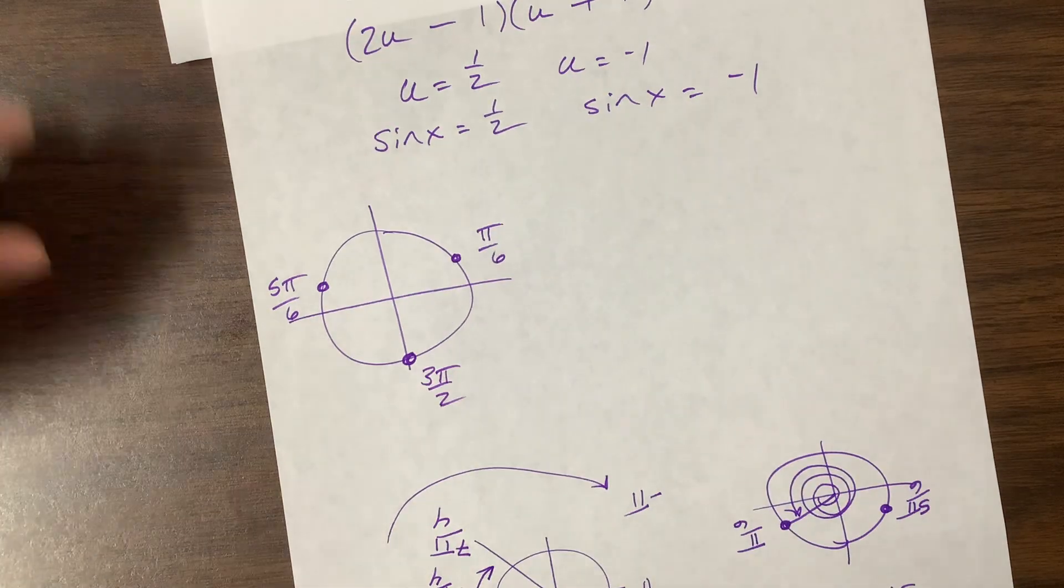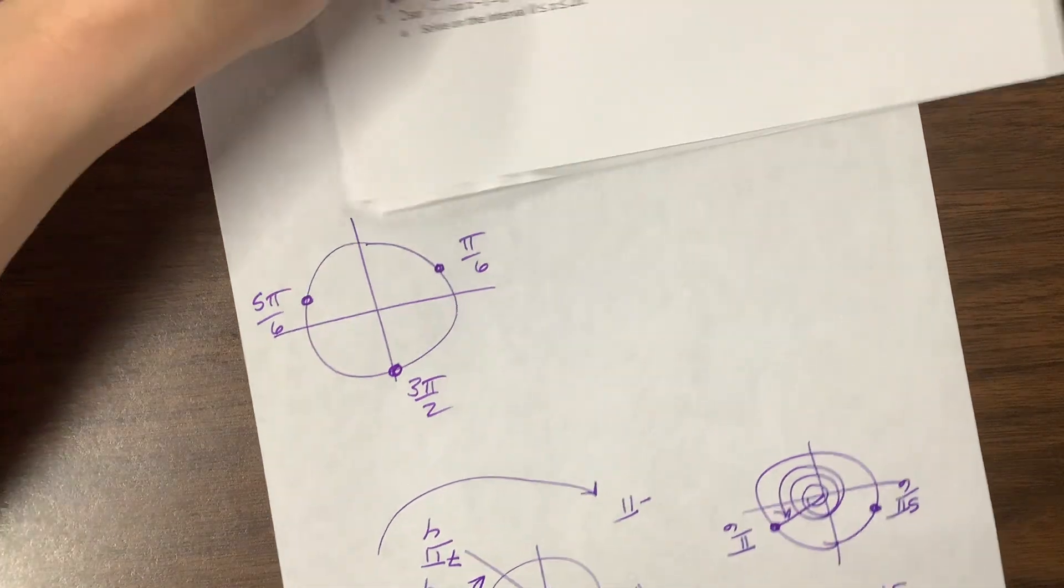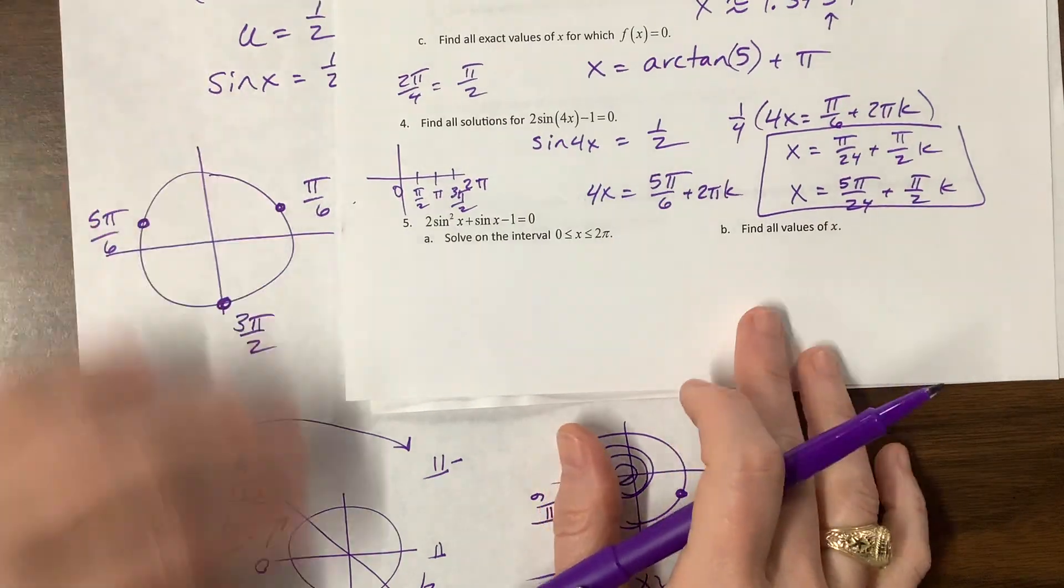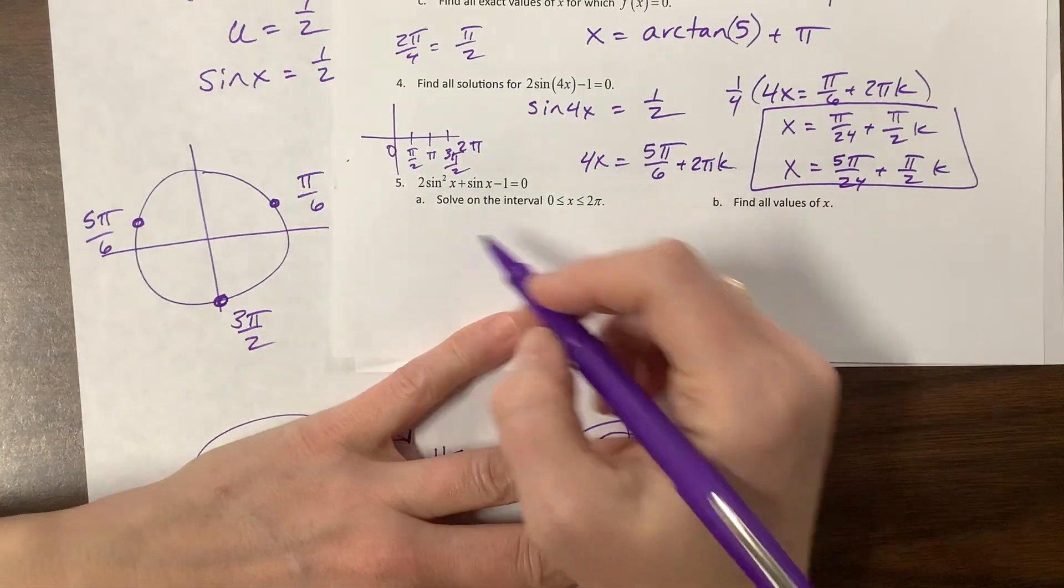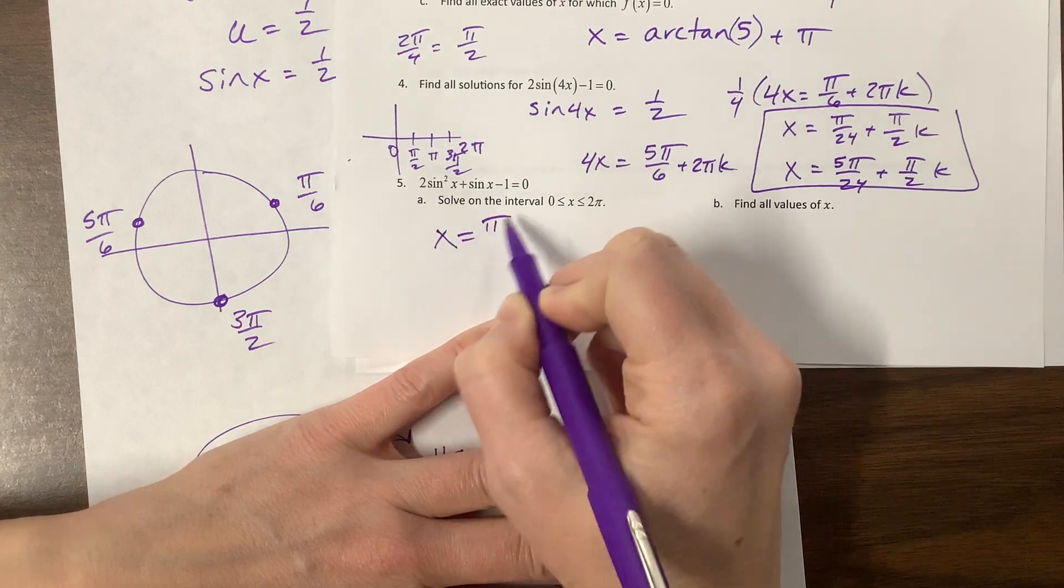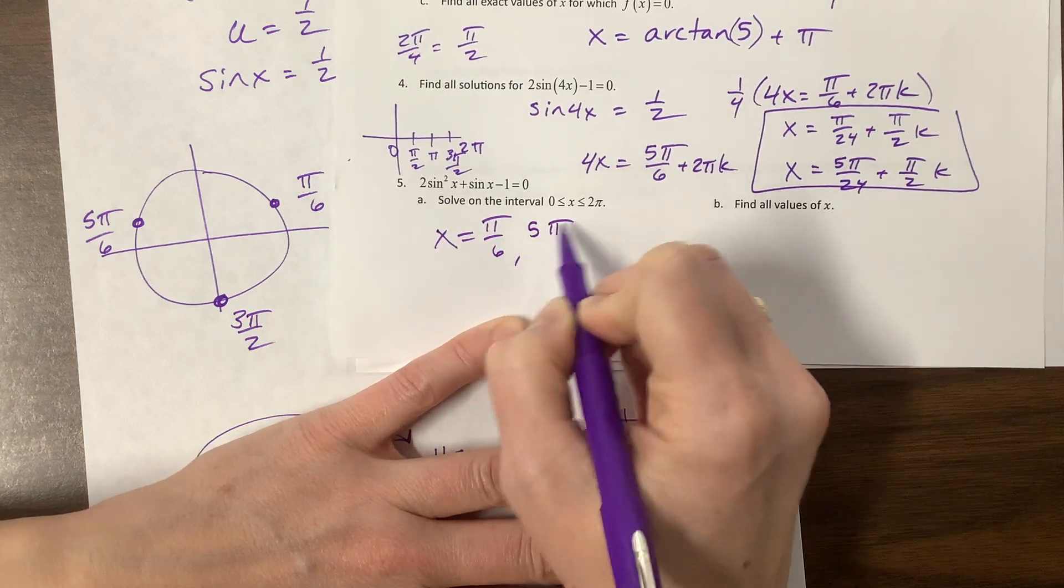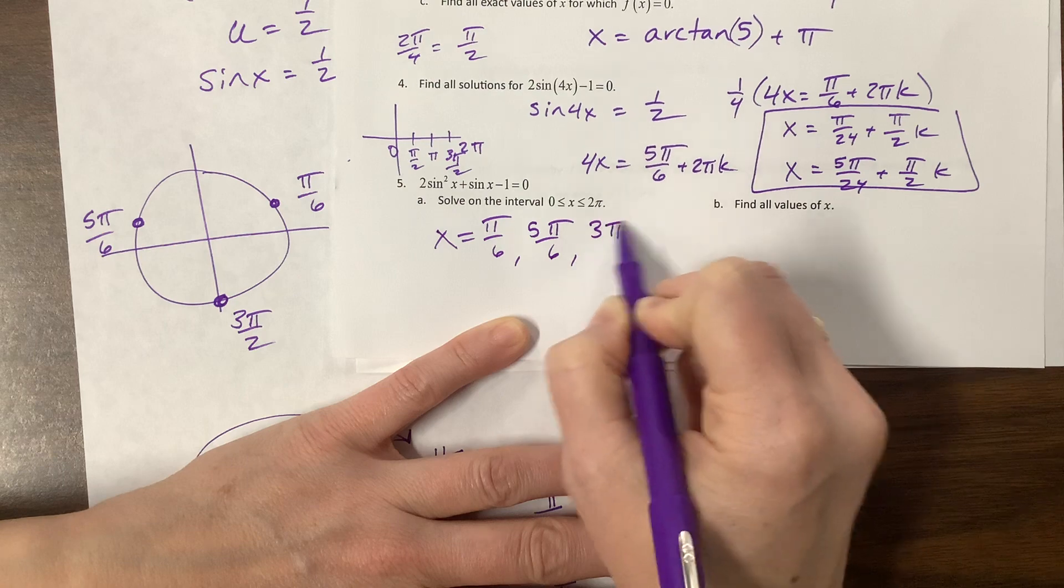But for the sake of the video, there you go. To answer the final question, there's so much clutter. On the interval, x equals π/6, 5π/6, and 3π/2.